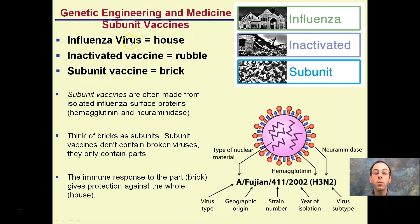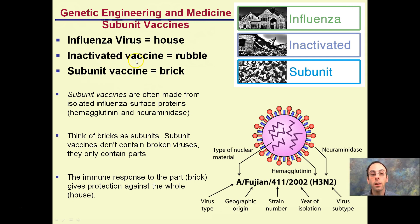Think of the influenza virus as a full house — brick, mortar, windows, doors, foundation, roof, everything. An inactivated vaccine is one type of vaccine where they basically take the house and make it into rubble — they knock it down.